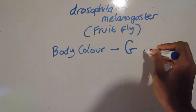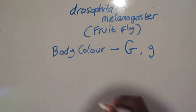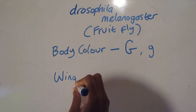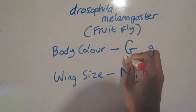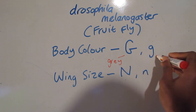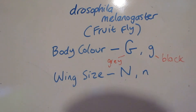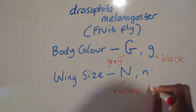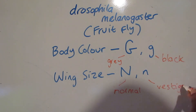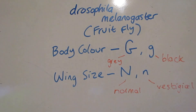Normally, the body color for our fruit fly is gray, so we use capital G to denote the dominant allele. The recessive allele, lowercase g, would be for a black color. For wing size, we have a normal wing size, denoted as capital N. But the recessive allele gives something called a vestigial size, meaning the wing is too short and has no function.